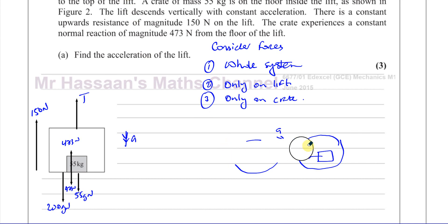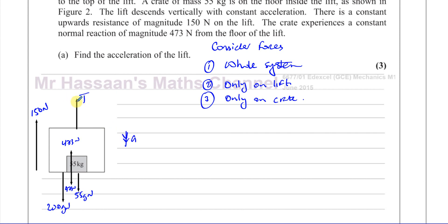The same three options apply here. If we consider the forces on the whole system, we need to know the tension in the rope — but that's unknown, as is the acceleration, so we have two unknowns. Similarly, if we consider the forces acting only on the lift, the tension in the string is also unknown. The only option where we know everything except what we're looking for is when we consider the forces acting on the crate alone.